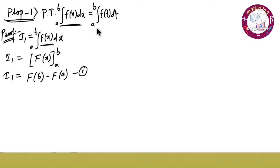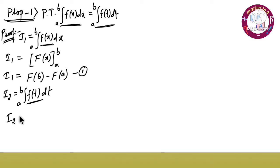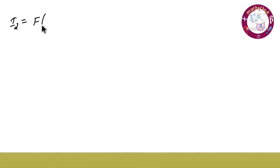Now let us consider the second integral i2. So i2 is equal to integration of a to b f of t dt. Integrating, small f of t becomes capital F of t. Applying limits a to b, i2 is equal to F of b minus F of a. This is equation number two.